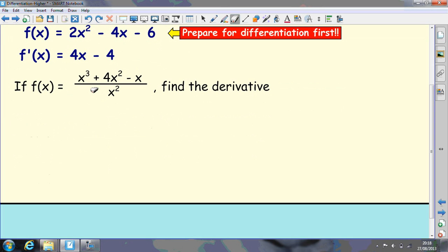In this second example, when you see something like this, to set it up for differentiation, there's a few ways to do it. You can either take the x² up and make it x⁻² and put brackets here. I prefer to split it up into three separate divisions: x³/x² plus 4x²/x² take away x/x² like this.